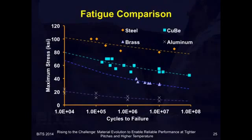This is a quick comparison of the fatigue properties of those materials I showed you earlier. Again, steel and copper beryllium are the best, where the aluminum and brass tend to fail much earlier at lower stress levels.